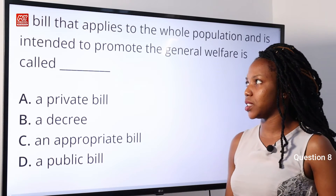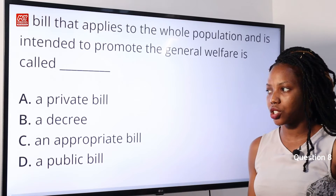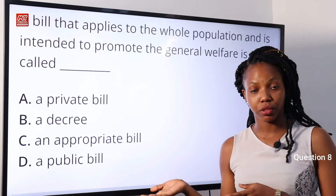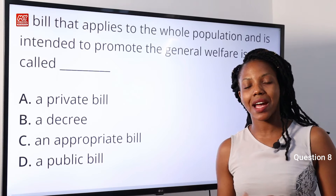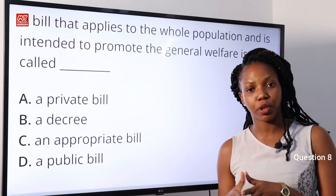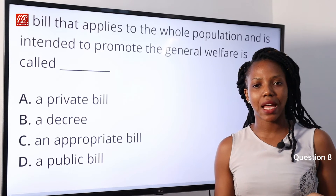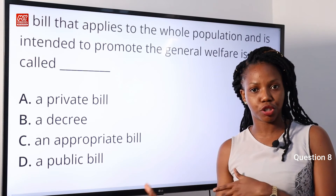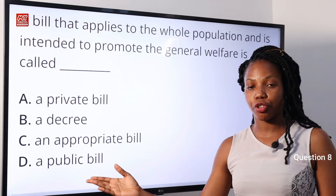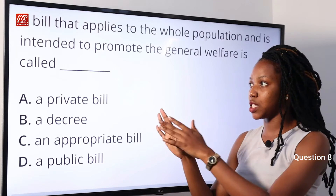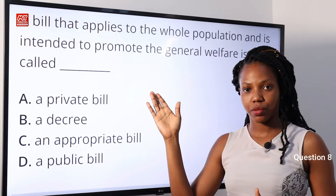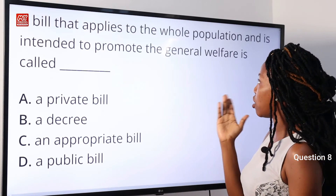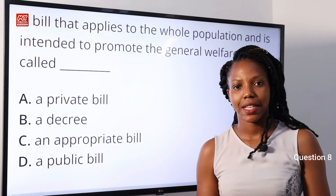Question 8: A bill that applies to the whole population and is intended to promote the general welfare is called — A: a private bill; B: a decree; C: an appropriation bill; D: a public bill. A bill is not a law until signed into law by an executive. There are three types: private bill, public bill, and money bill. A public bill deals with issues confronting the country as a whole, so option D — public bill — is the correct answer.